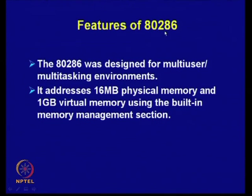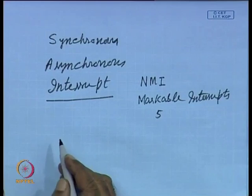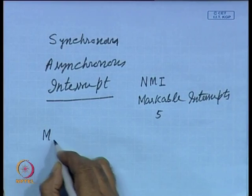Coming to the 80286: the 80186 was meant for embedded applications, whereas the 80286 is an extension of 8086 primarily used for making computers. The processing capability was enhanced in 80286, and another new feature was incorporated — a memory management unit.